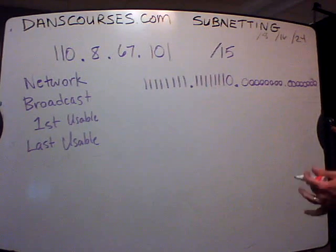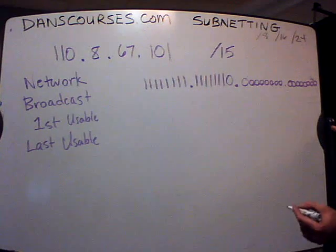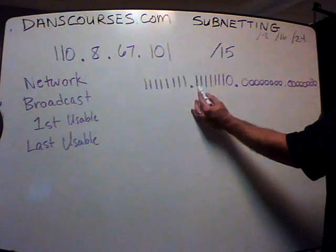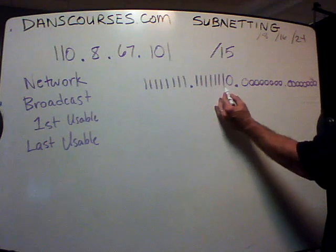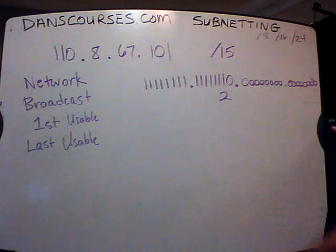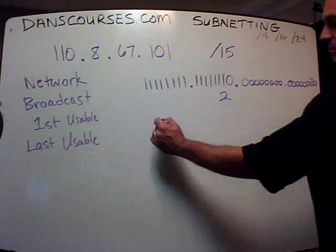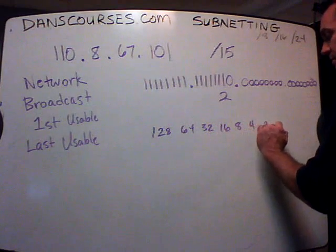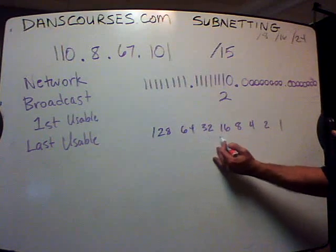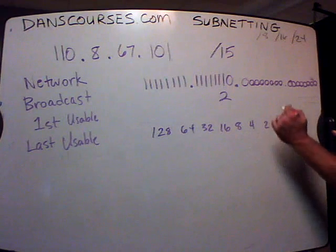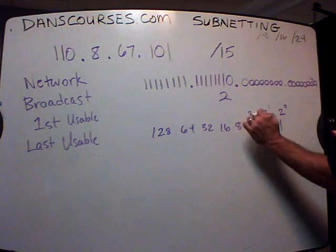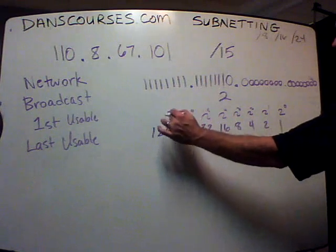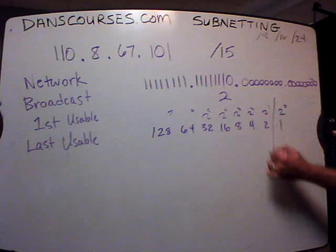All you have to know for the magic number is: what is the place value of the last one? In the second octet, you have seven ones and a zero. The place value of the last one is in the twos place. Because 8 bits have the following place values: 128, 64, 32, 16, 8, 4, 2, 1 — because this is 2 to the zero, 2 to the one, 2 to the two, up through 2 to the seventh power.